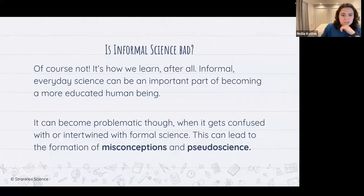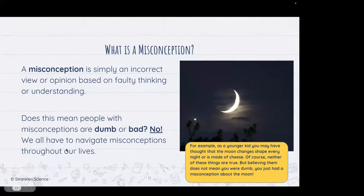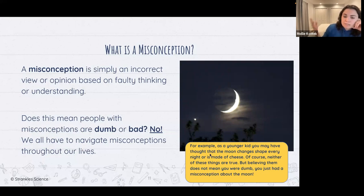Informal science is not bad — it's how we learn — but it can become problematic when it gets confused with or intertwined with formal science, which can lead to the formation of misconceptions and pseudoscience. A misconception is simply an incorrect view or opinion based on faulty thinking and understanding. People with misconceptions aren't dumb — they just navigated life with that misconception. For example, as a younger kid you may have thought the moon changes shape every night or was made of cheese.